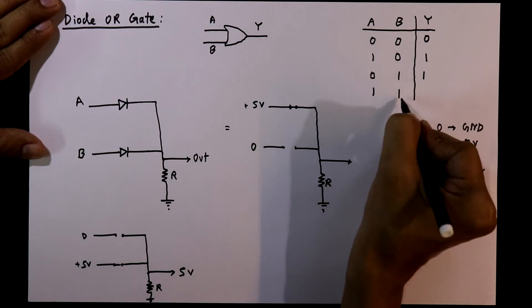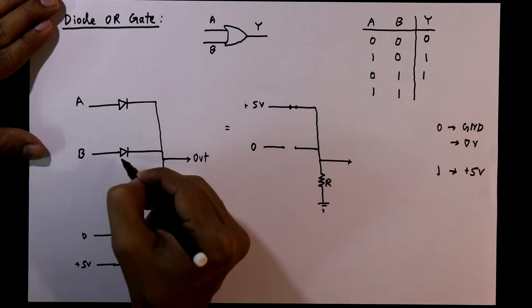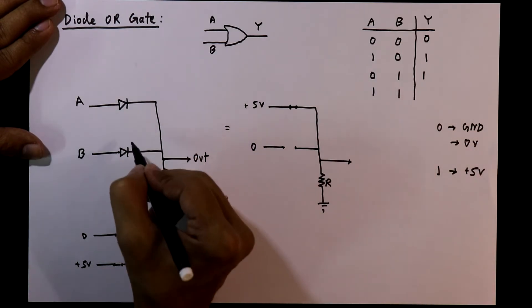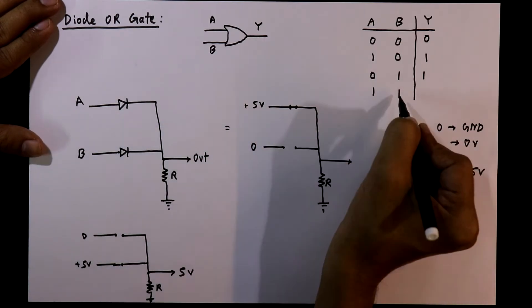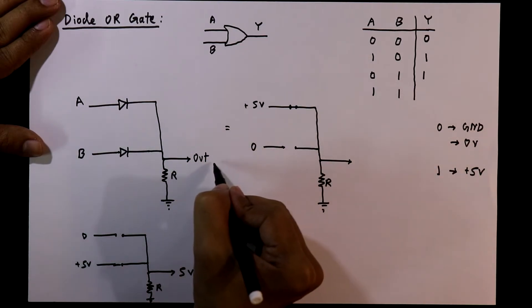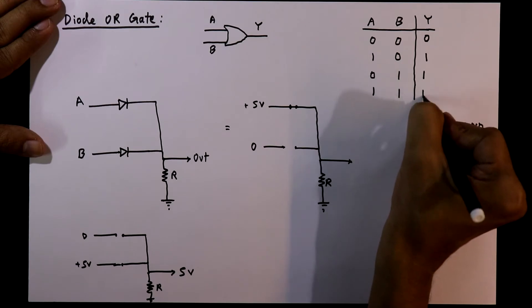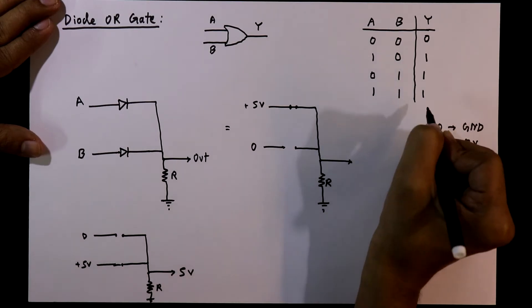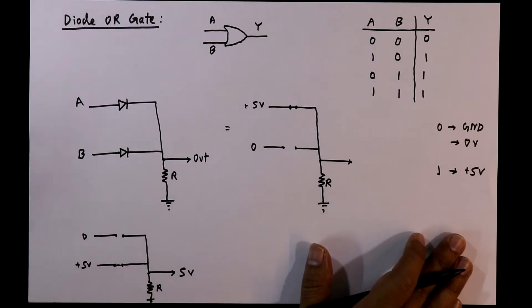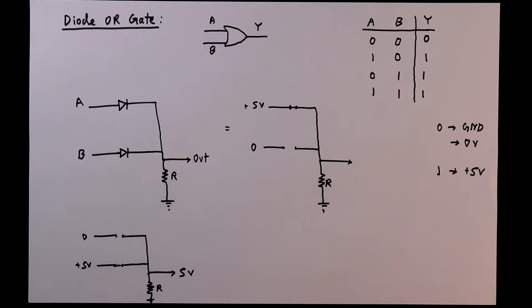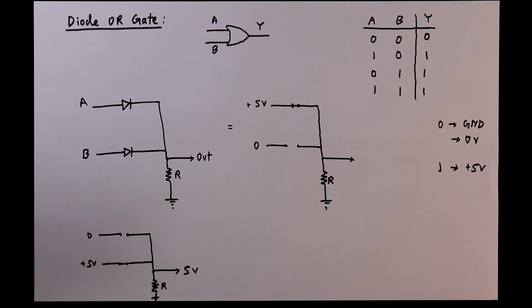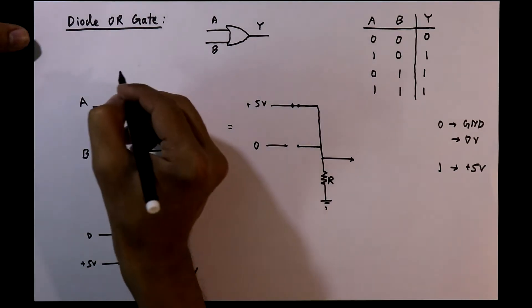When both inputs are one, both diodes are working as closed circuits, so in this condition also we will have plus five volts at the output point. Now we will see this in a practical circuit.